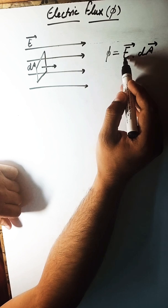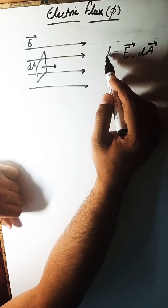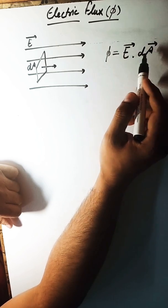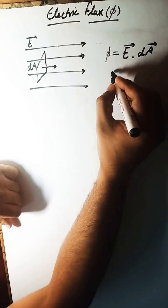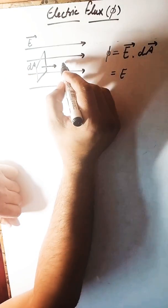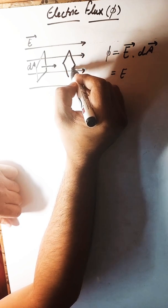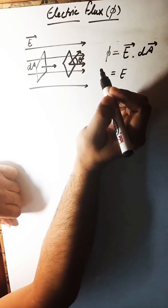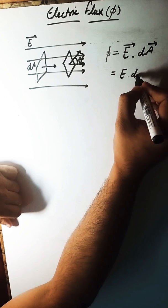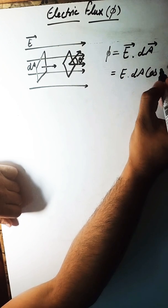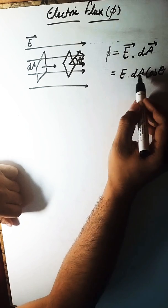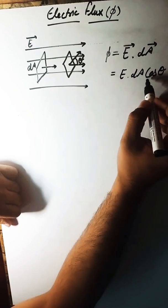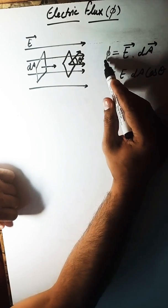Greater or smaller electric field intensity results in greater or smaller electric flux, and similarly a greater or smaller area changes the flux. The dot product accounts for the third possibility: if the surface is tilted, the normal goes at an angle theta to the electric field direction. So E dot dA equals E dA cos theta — we use cosine because it is a dot product and the result is a scalar quantity.